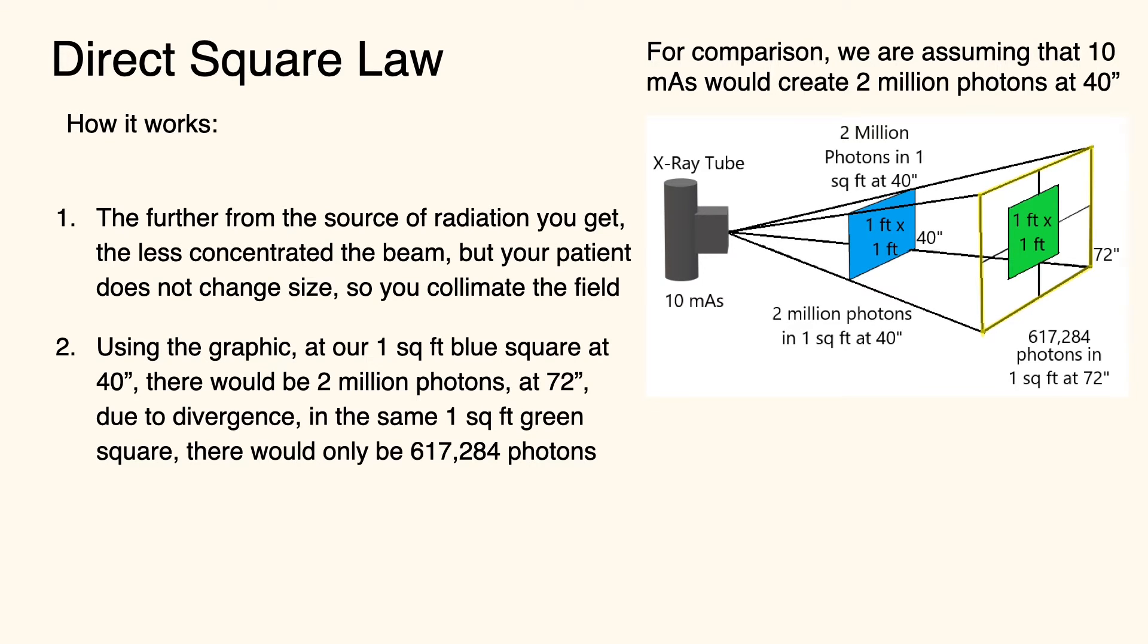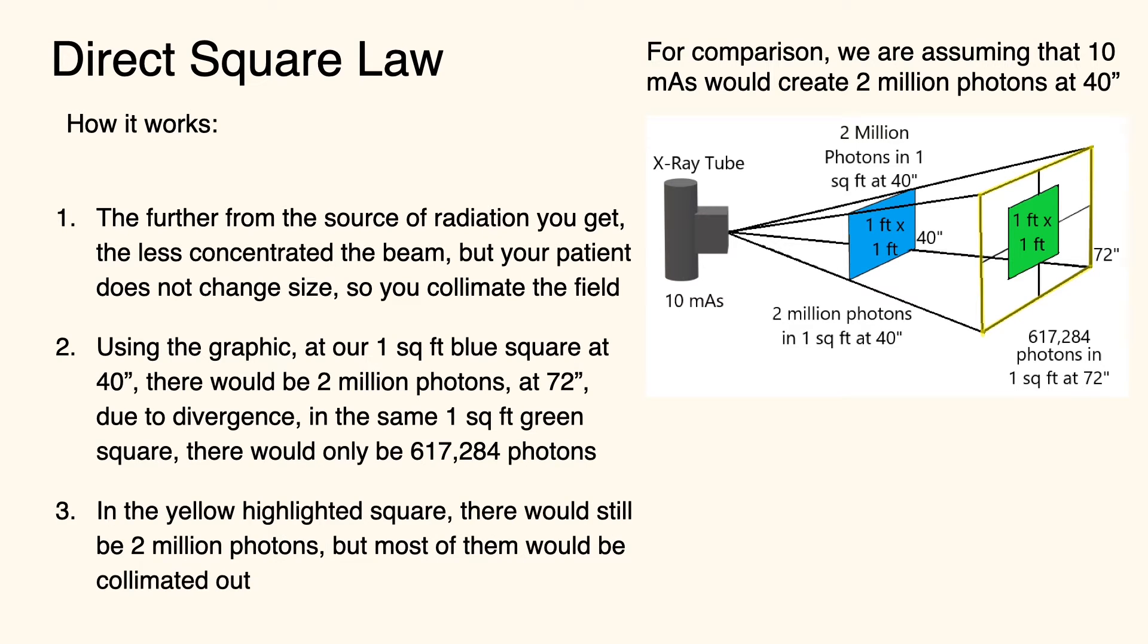But it has a lot less radiation because as it shows in the yellow square, the yellow highlighted square, there's still that two million photons. But in a one foot by one foot square, there's going to be roughly a little over 600,000 photons.